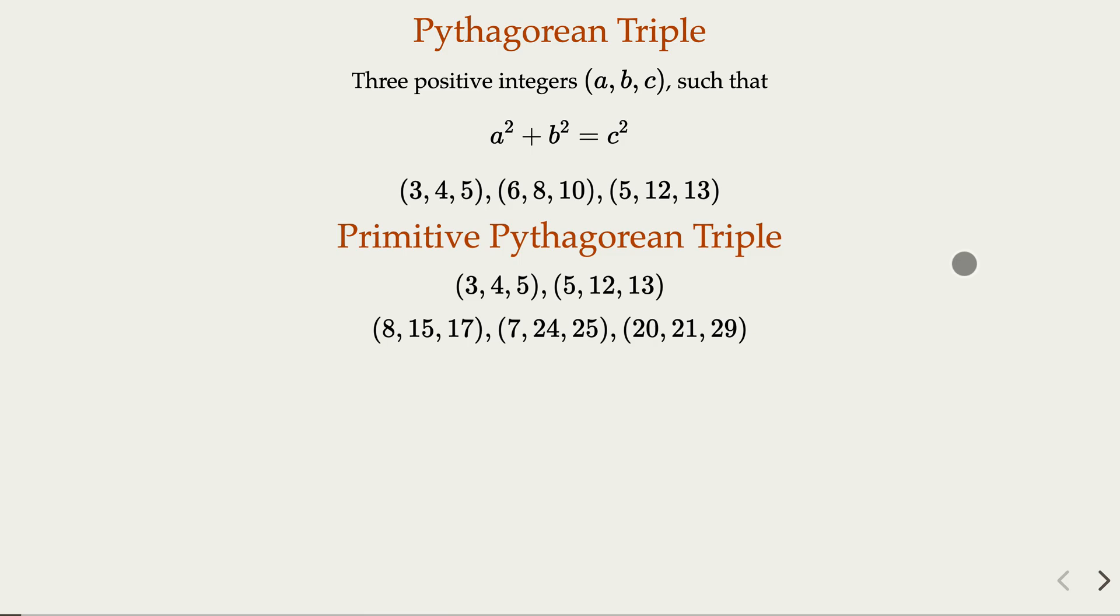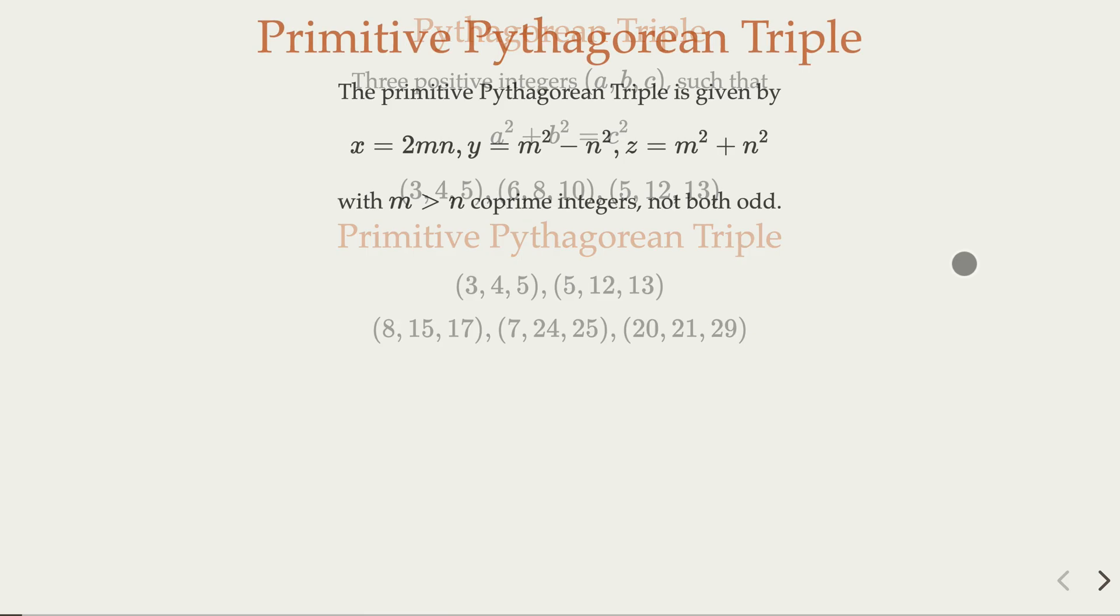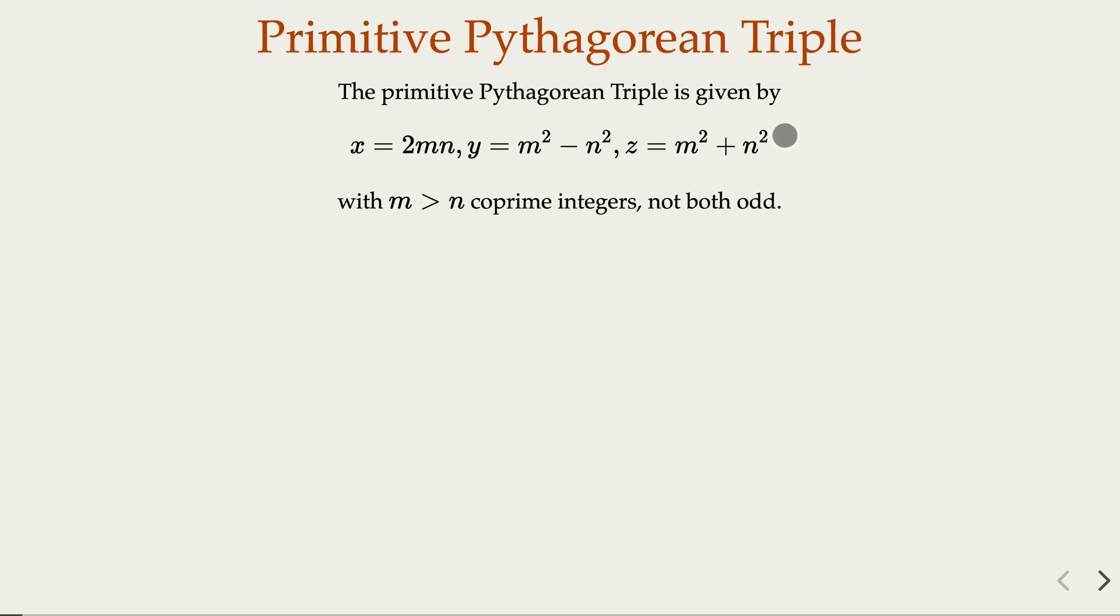An important result for the primitive Pythagorean triple is that they can be given by this formula here, x, y, and z by m and n, where they're coprime integers and not both odd. If you do that you can use it to generate all primitive Pythagorean triples. For example the famous three four five can be generated with m equal to 2, n equal to 1.